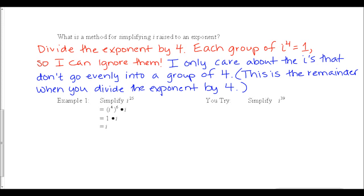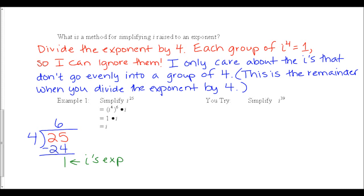Example 1: simplify i to the 25th. My exponent is 25. I divide 25 into groups of four: 25 divided by 4 is 6 with a remainder of 1. This remainder of 1 is my i's exponent. I have six groups of i to the fourth — each equals 1 — and then this one extra i. So the six groups equal 1, and the extra i gives me a final answer of i. Remember, in your final answer, i can never have an exponent.